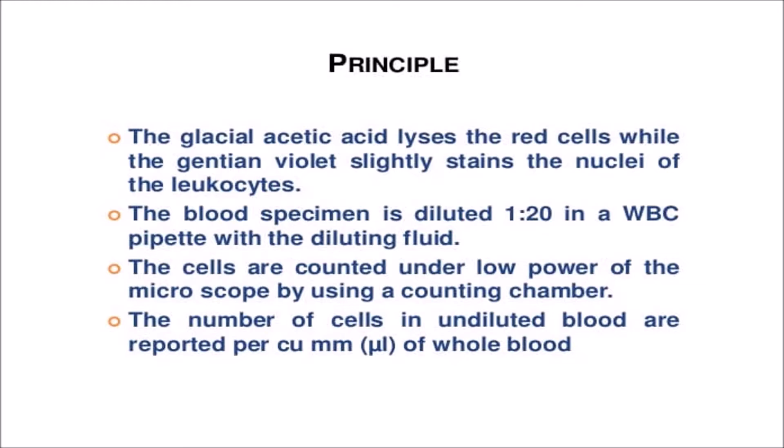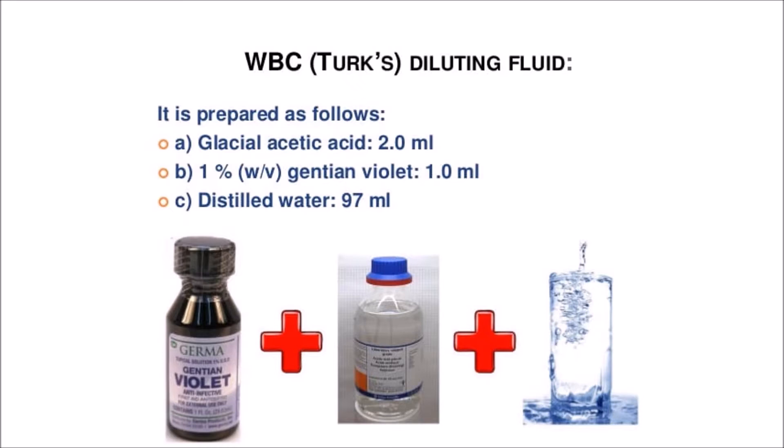WBC diluting fluid, especially Turk's fluid. The composition of Turk's fluid as follows: glacial acetic acid 2ml, 1% gentian violet 1ml, distilled water 97ml.